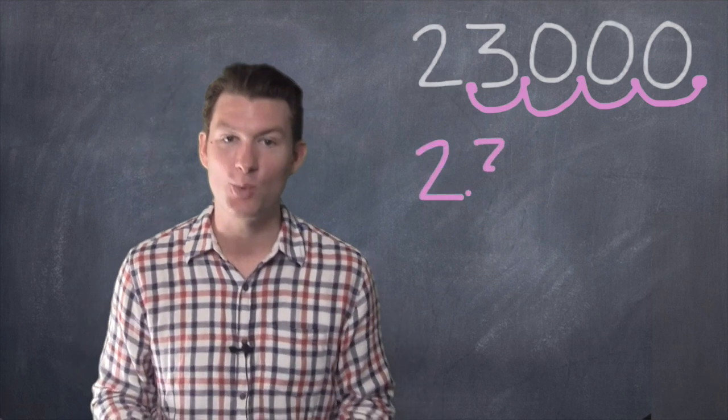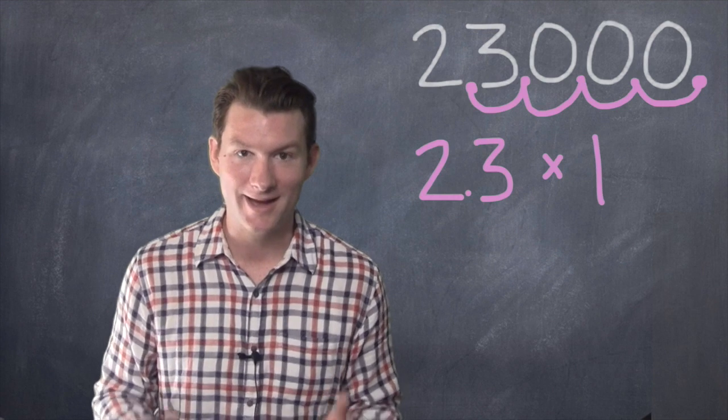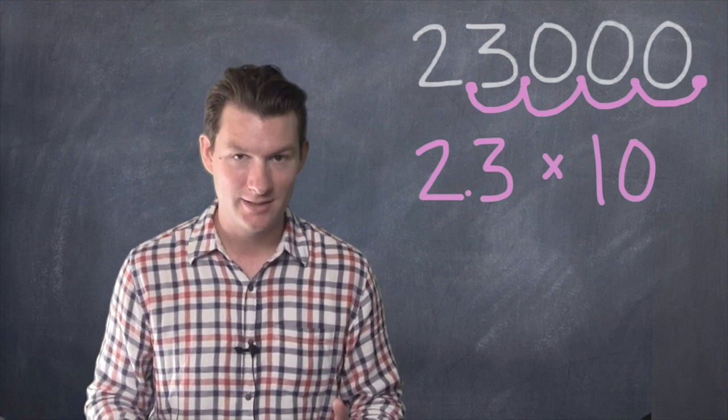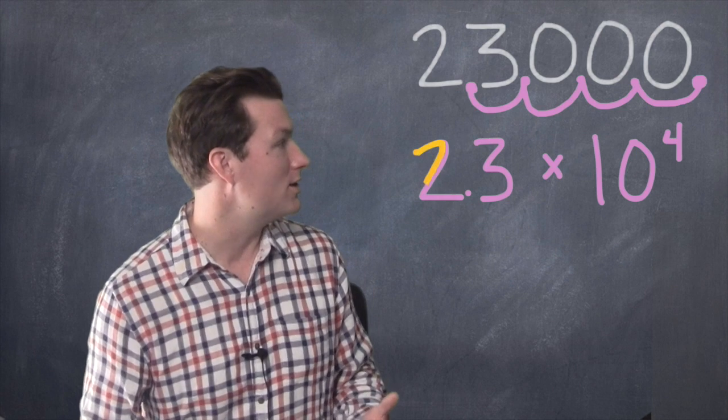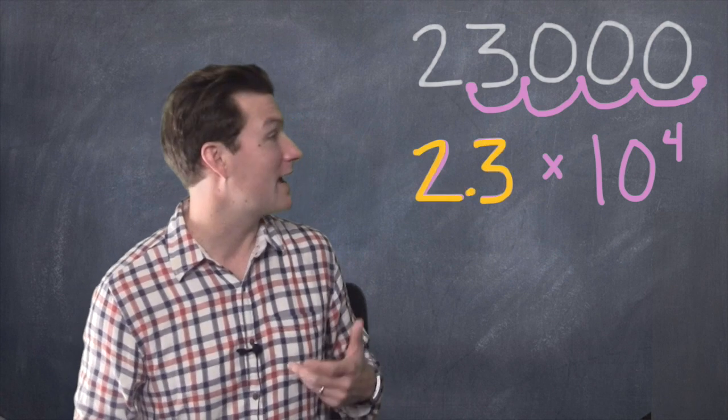So we have 2.3 times 10 to the however many times we moved that decimal point. We moved it 1, 2, 3, 4. So it's times 10 to the fourth.